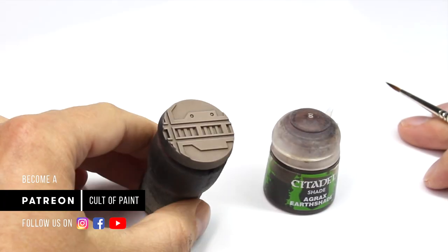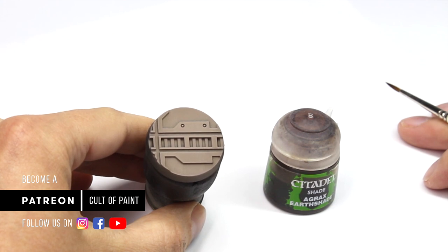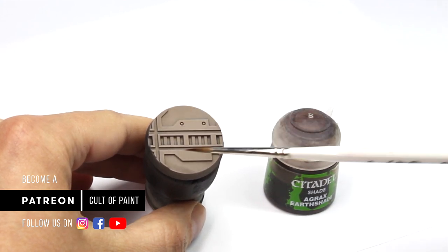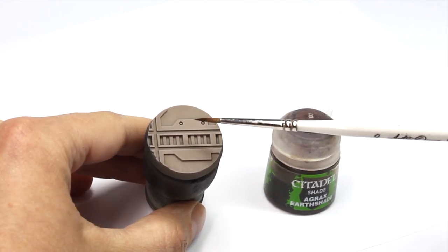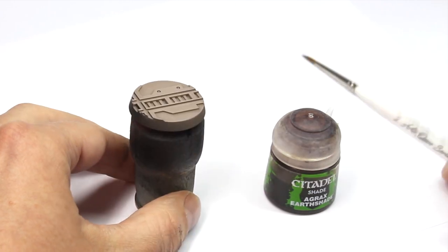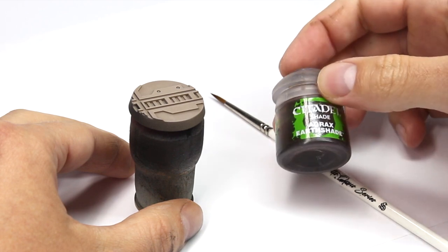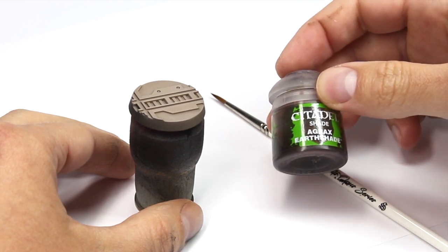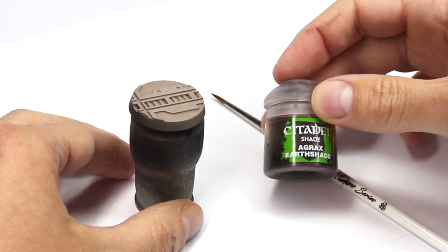On this base I've deliberately created a very high surface tension by giving the whole thing a coat of ultra matte varnish, and I'm also going to use a thin water-based product to do the wash with, in this case Agrax Earthshade. Water has a relatively high surface tension.